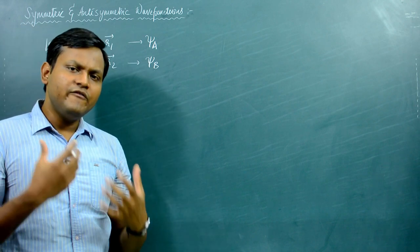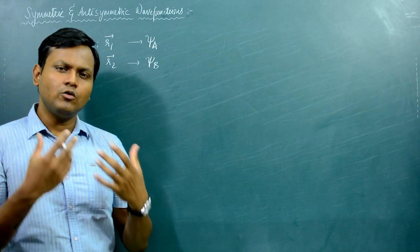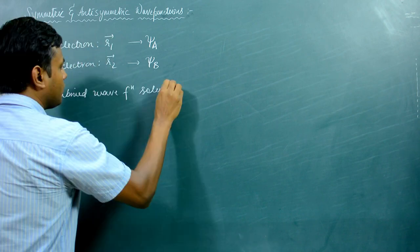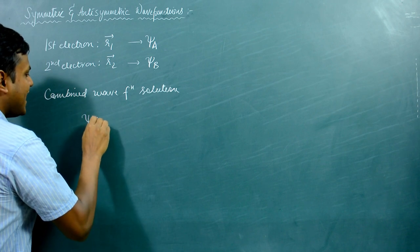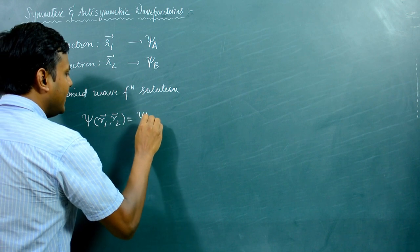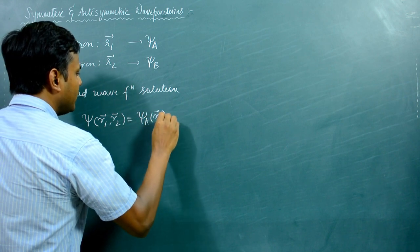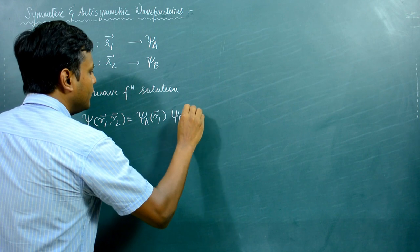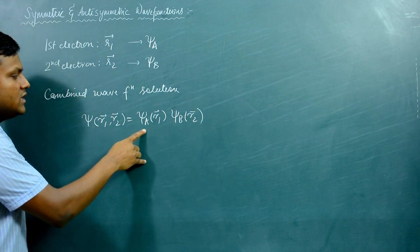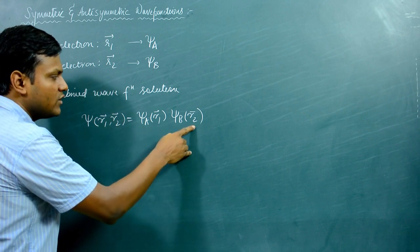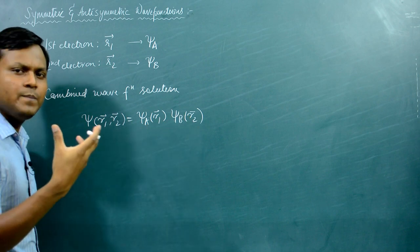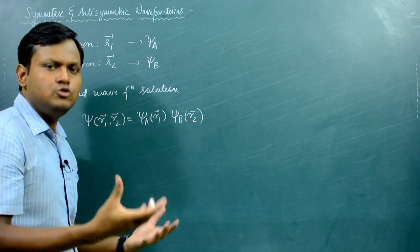The wave function solution for this two-particle system can be written in a combined manner: ψ(R1, R2) = ψA(R1) · ψB(R2). Here the first electron is at position R1 in wave function state ψA, and the second electron is at position R2 in wave function state ψB. Their product determines the wave function of the combined two-particle system.